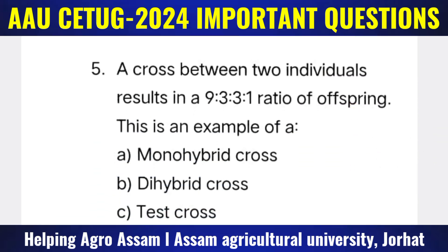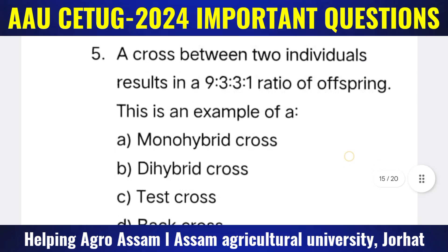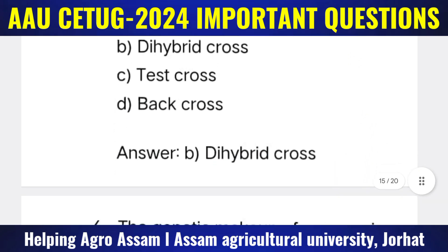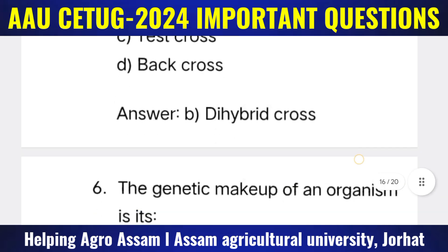Question 5: A cross between two individuals results in a 9:3:3:1 ratio of offspring. This is an example of — Options: (A) Monohybrid cross, (B) Dihybrid cross, (C) Test cross, (D) Back cross. The correct answer is option B — dihybrid cross.